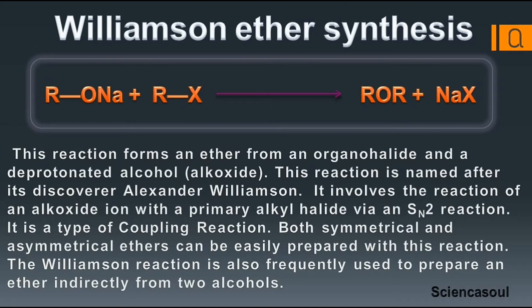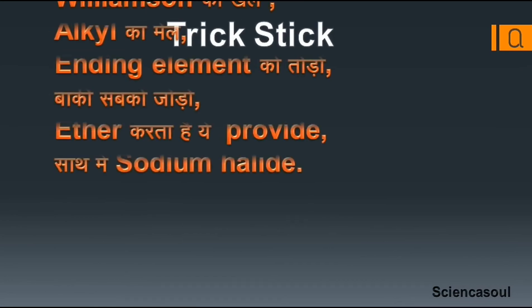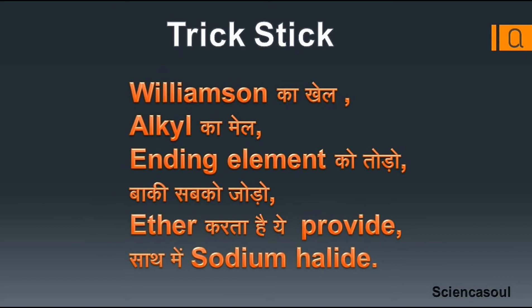The Williamson reaction is also frequently used to prepare an ether indirectly from two alcohols. It involves an organohalide and a deprotonated alcohol. Trick: Williamson's game — alkyl's game — the reaction provides sodium halide as a byproduct.